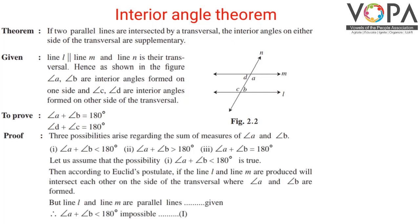For the proof, three possibilities arise regarding the sum of measures of angle A and angle B. First, angle A plus angle B is less than 180 degrees. Second, angle A plus angle B is greater than 180 degrees. Third, angle A plus angle B is equal to 180 degrees.